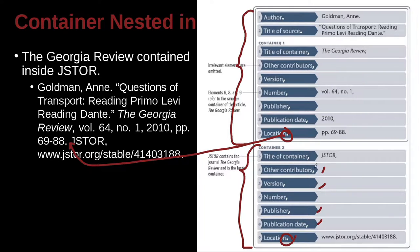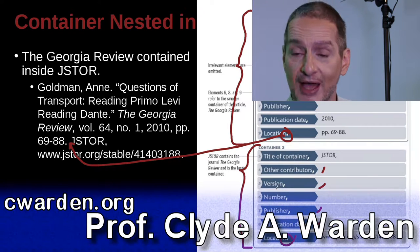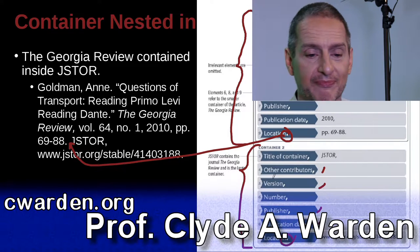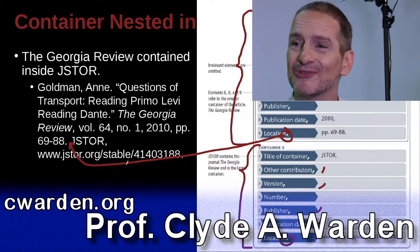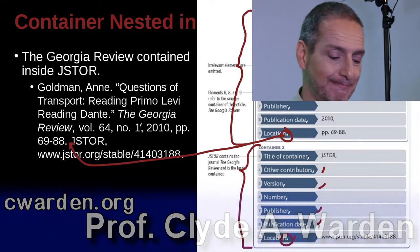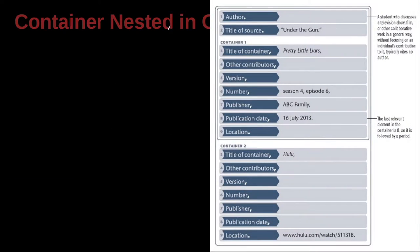You don't have to have all of these different things like versions and numbers and volumes — you don't have to have them all. But if you have some, then you add them. So we go ahead and add the web address. Container nested inside of a container — let's look at this example. Here we have this nice MLA graphic.